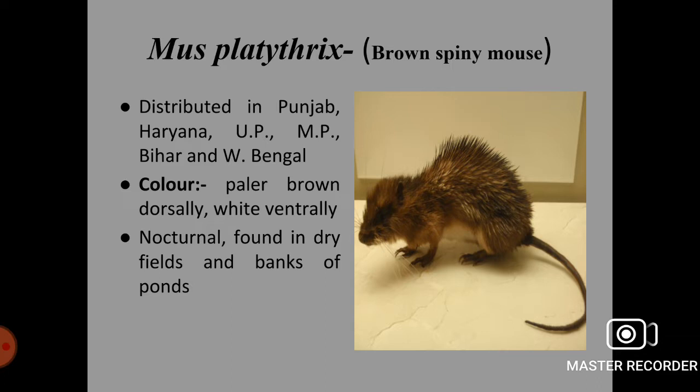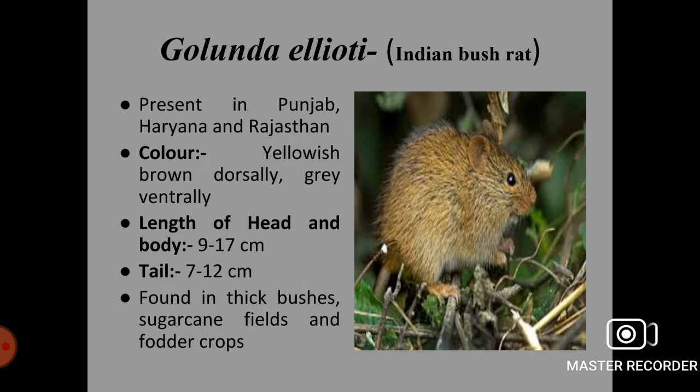Next is Golunda ellioti, the Indian bush rat. This species is present in states like Punjab, Haryana and Rajasthan in India. Colour is yellowish brown dorsally and greyish ventrally. Length of head and body is 9 to 17 cm, and tail length is 7 to 12 cm. This species is found in thick bushes, sugarcane fields and fodder crops.